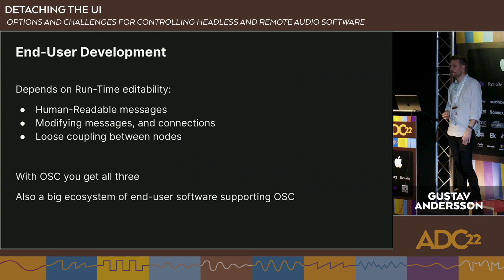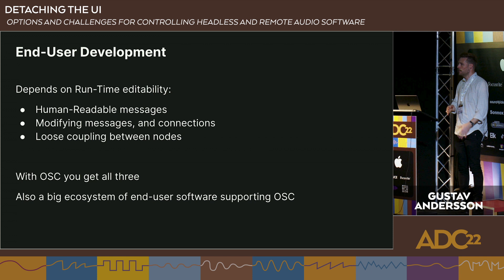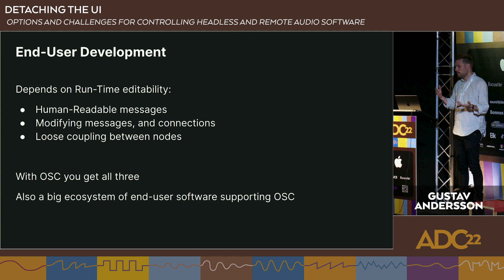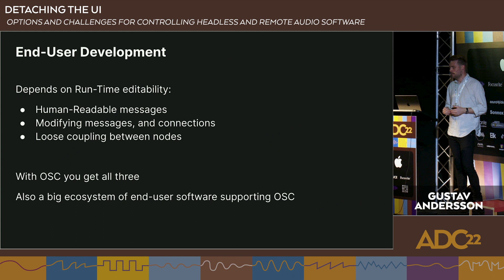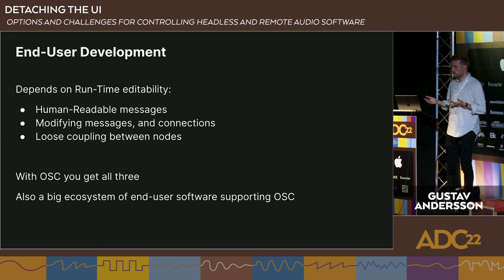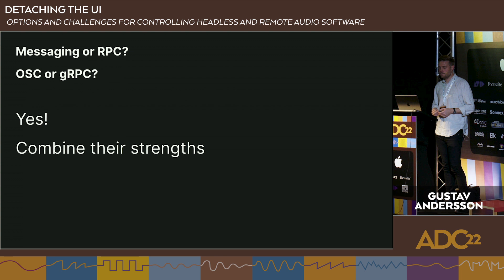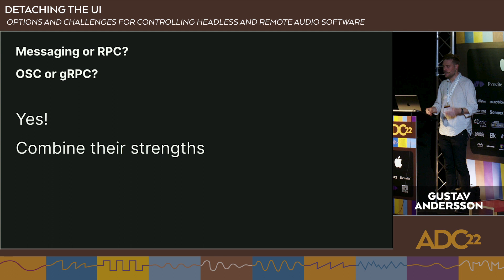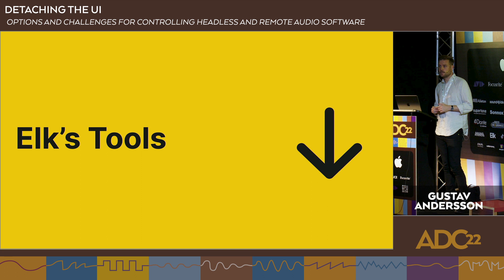For end-user development, gRPC may not be the best choice — it's complex, requires programming knowledge, requires stopping and recompiling if you change the API, and creates tight coupling between specific plugins or processors. OSC is the complete opposite: human-readable messages, easy to modify, low coupling between nodes so you can connect them at runtime, and a huge ecosystem of audio-visual software that just works together. So should you choose simple messaging or remote procedure call? Yes — you should have both, because they have different strengths, and combining them gives you the best of both worlds.